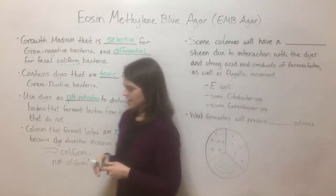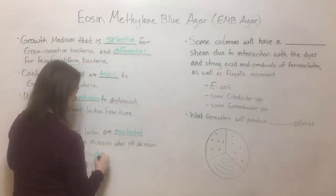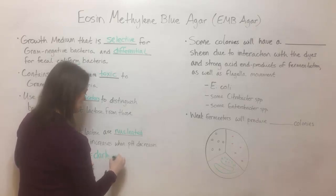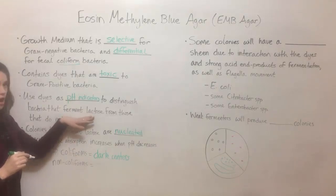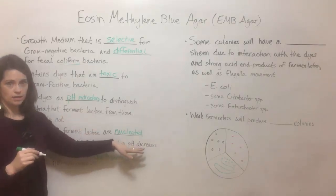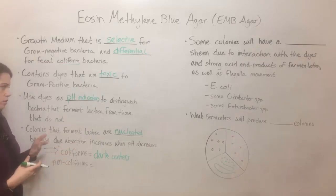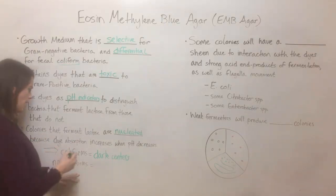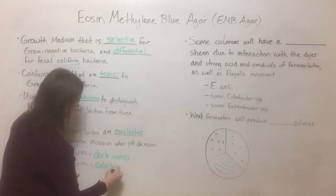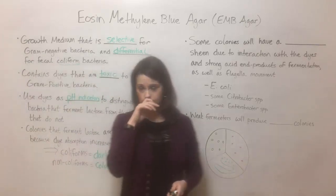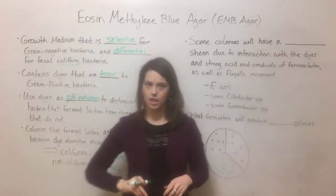Coliform bacteria will have those dark nucleated centers, whereas non-coliform bacteria — those that do not ferment the lactose — do not decrease the pH. They're not going to absorb that dye, and the dye isn't going to be changing color in the same way. So they will have colorless colonies. In summary: coliforms will have dark centers, non-coliforms will be colorless.